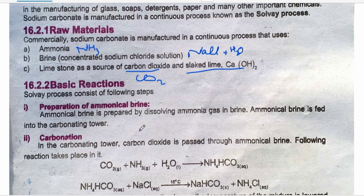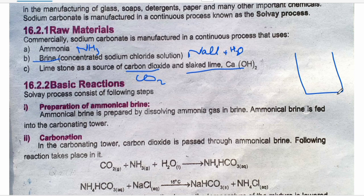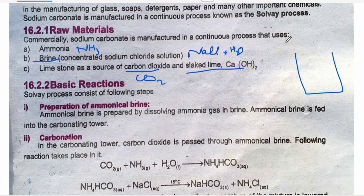The first step is preparation of ammoniacal brine. Ammoniacal brine is prepared by dissolving ammonia gas in the brine solution — NaCl and water solution. Brine is a concentrated NaCl solution, meaning a large amount of NaCl is dissolved in water. You dissolve ammonia gas into this brine, and it becomes ammoniacal brine.